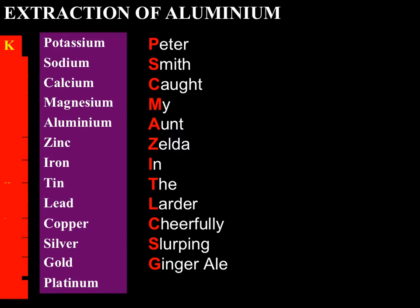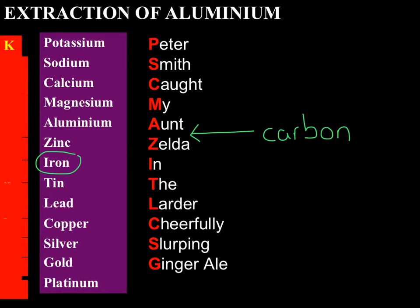The first thing we've got to consider is how we can extract this aluminium. On the screen I have put the reactivity series of metals, which we considered at the start of our Year 12 course. We mainly talked about iron metal, and we learned that iron is extracted from its ore using carbon. If I were to slot carbon in, it would sit just between aluminium and zinc. Carbon is above iron in the reactivity series, and that explains why we can use carbon to extract iron from its ore.